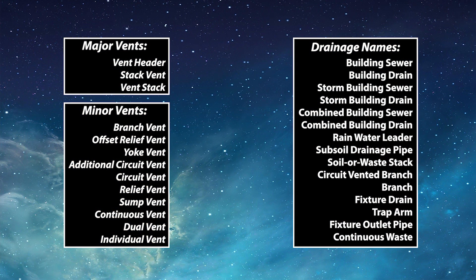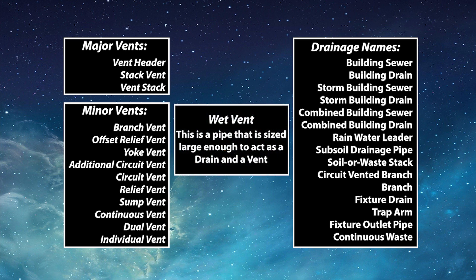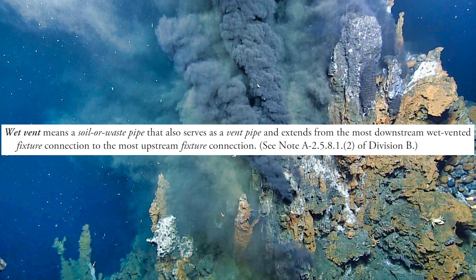In the plumbing trade we have many different types of drains and many different types of vents, but then we have one type of pipe that lands right in between the two. It's called the wet vent because it is a drain and a vent all built into one pipe. The code defines it this way: a wet vent means a soil waste pipe that also serves as a vent pipe, and extends from the most downstream wet vented fixture connection to the most upstream fixture connection.